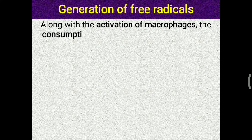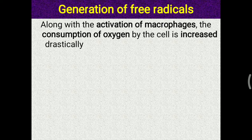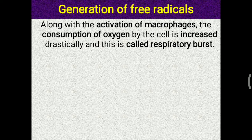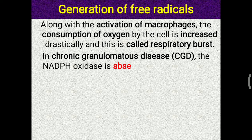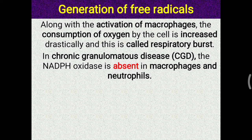That is how free radicals are generated by macrophages for the purpose of phagocytosis and killing bacteria. Along with the activation of macrophages, oxygen consumption by the cell increases drastically, which is why this process is called a respiratory burst — because of the excessive intake of oxygen.